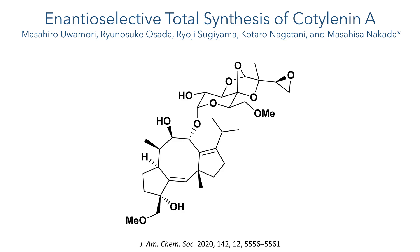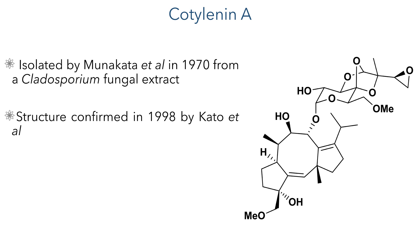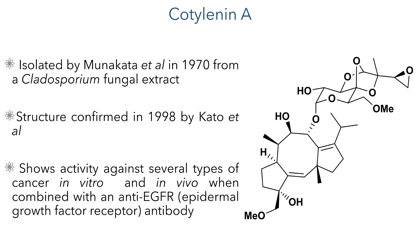The work that we will be looking at was published by the NACADA group from Waseda University in Tokyo. Kotelenin A was first isolated by Munukata in 1970 from a Cladosporium fungal extract, and its structure wasn't confirmed until 1998, which was carried out by Cato et al. This molecule has been studied extensively and it shows activity against several types of cancer in vitro and also in vivo when combined with an anti-epidermal growth factor receptor antibody.